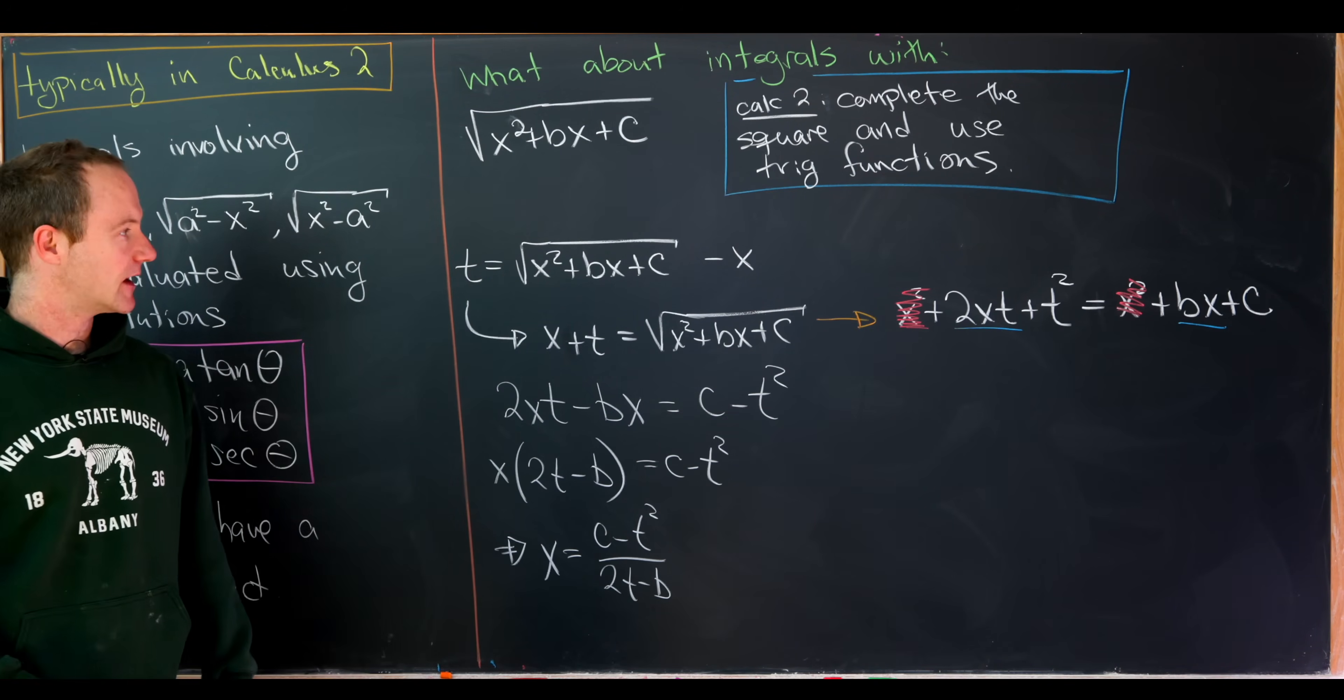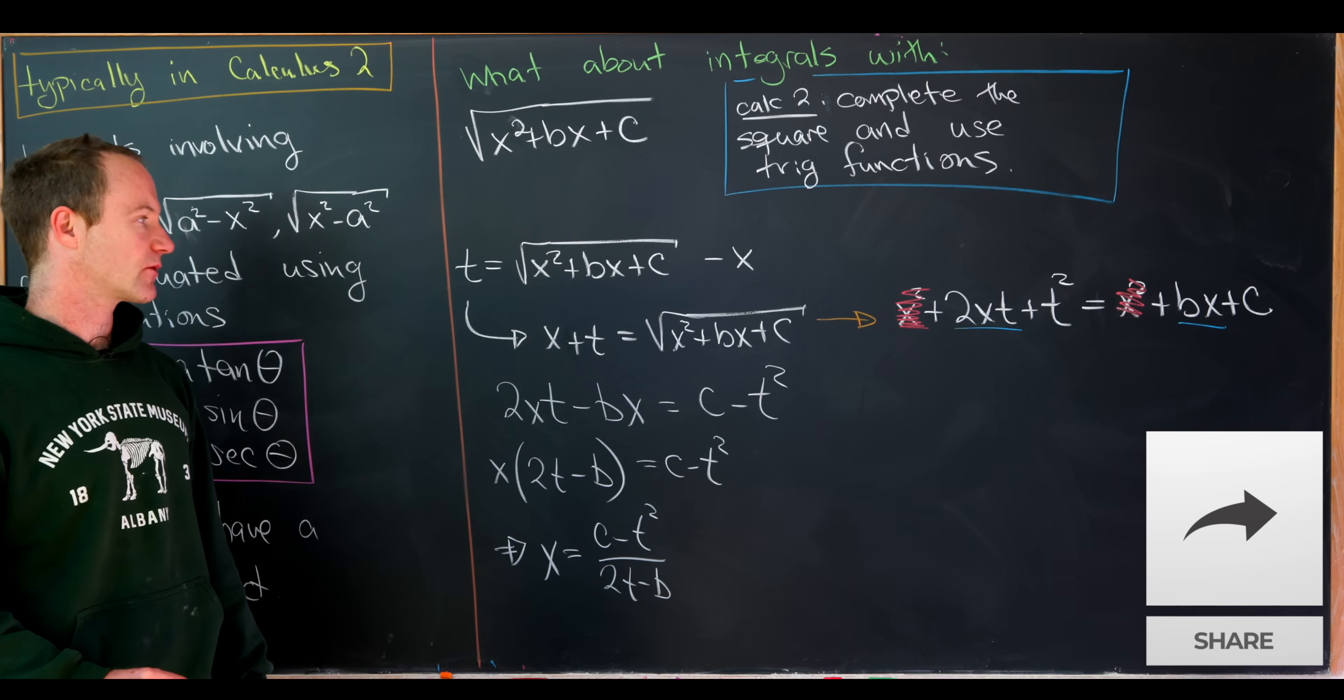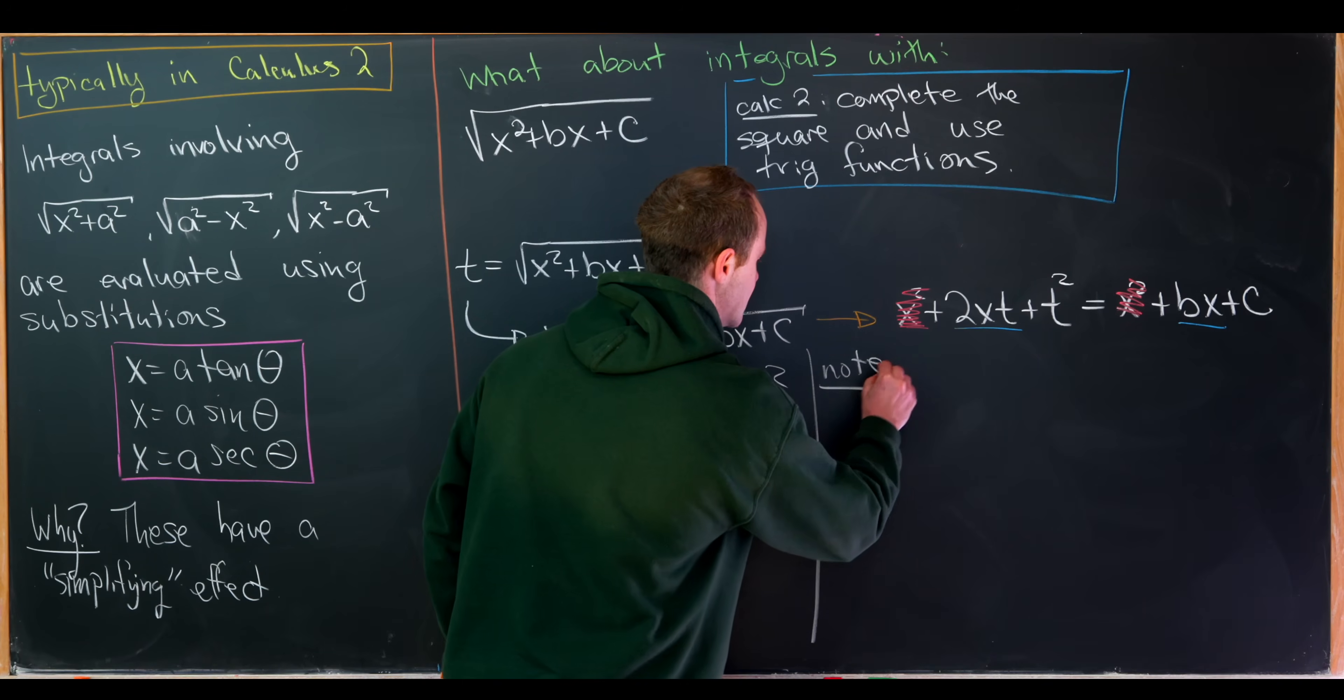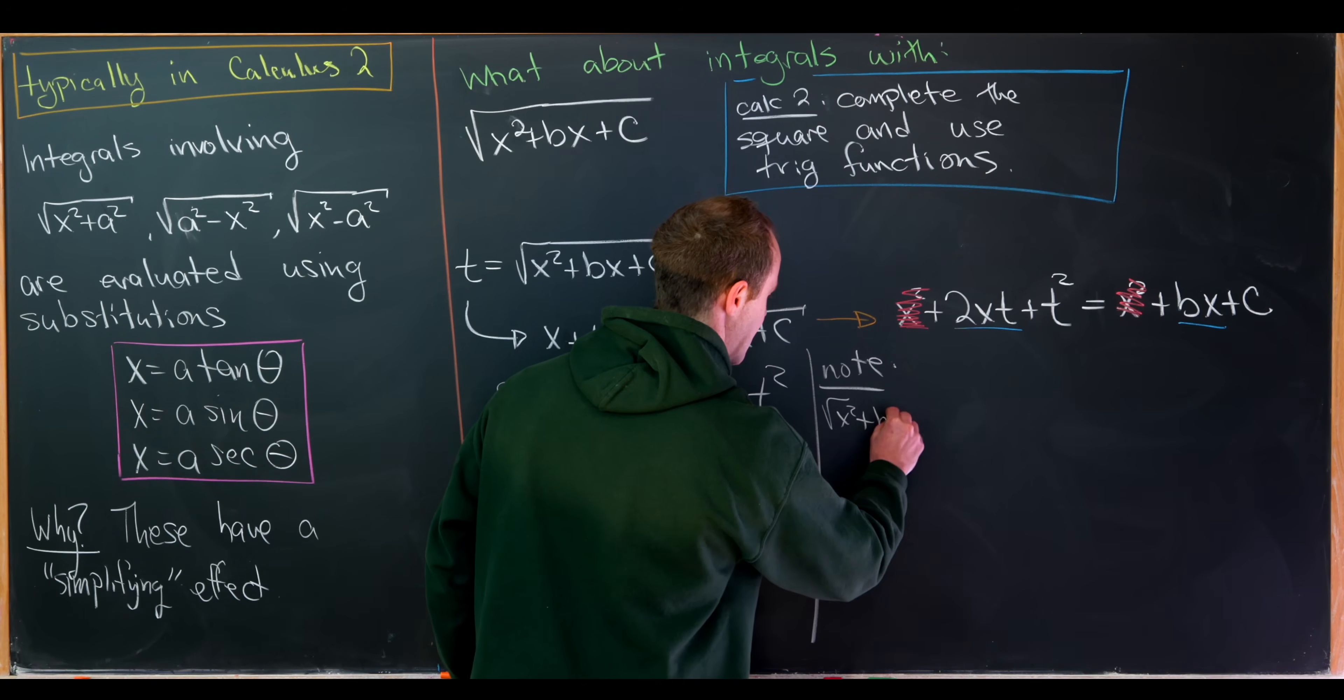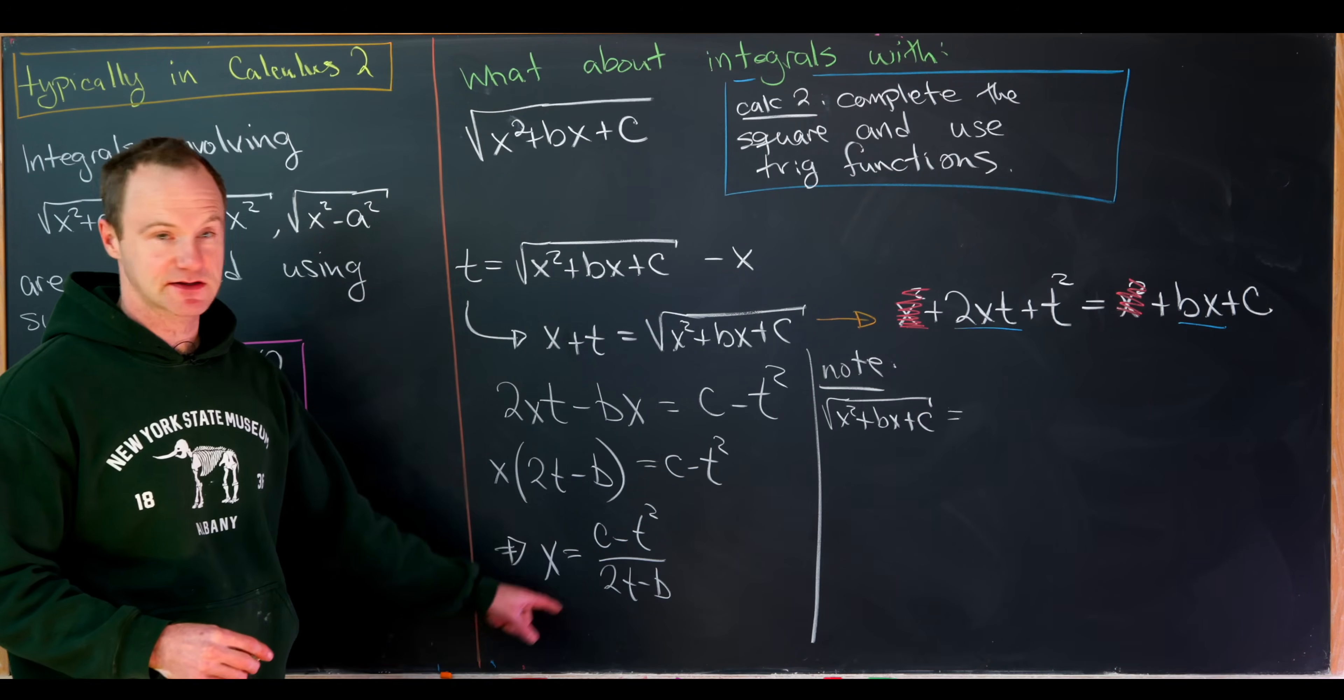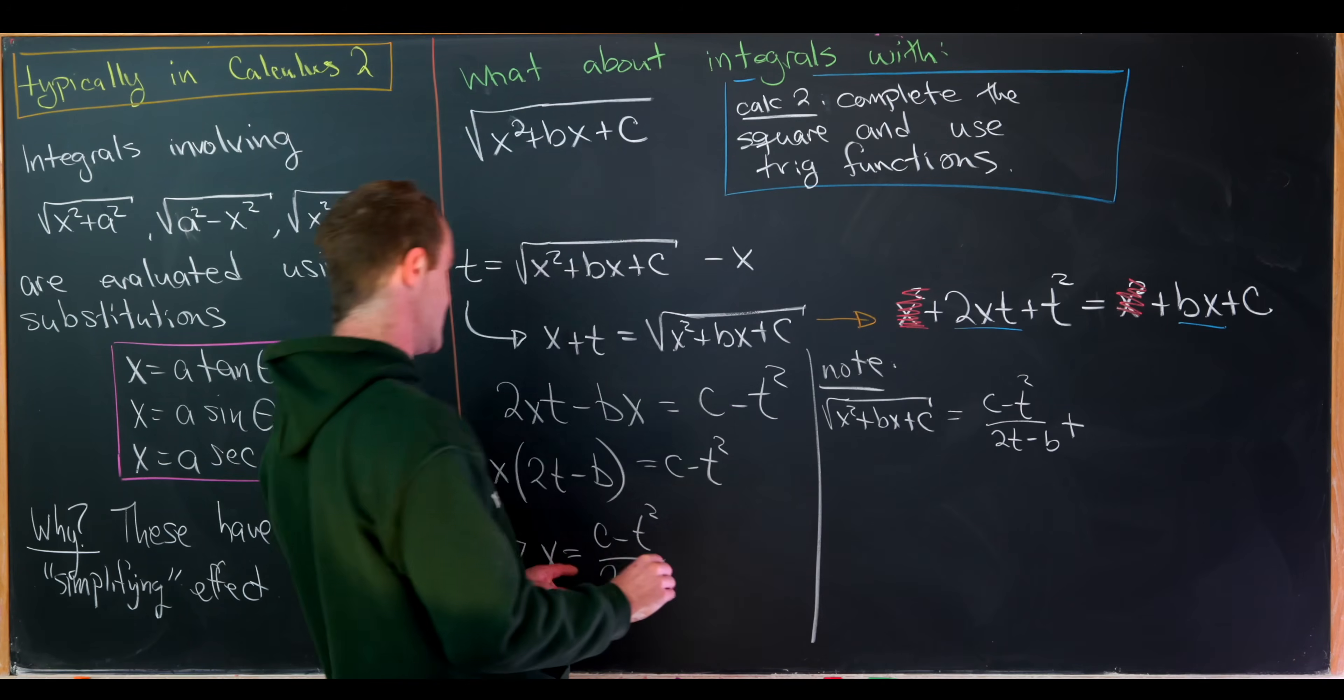Okay, so that's x in terms of t, but that means we can also write this square root of x squared plus bx plus c in terms of t as well. So let's note that. So note in this setup, we have the square root of x squared plus bx plus c. Well, like I said before, it's x plus t, but we can use this value for x. And so that'll be c minus t squared over 2t minus b plus t.